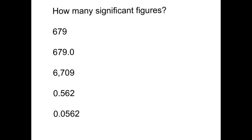Let's look at some examples. 679 has three non-zero digits and no zeros, so it has three significant digits. The same value written as 679.0 has a terminal zero with a decimal point, giving four significant digits. In 6709, three non-zero digits plus one zero between two non-zero digits gives four significant digits.